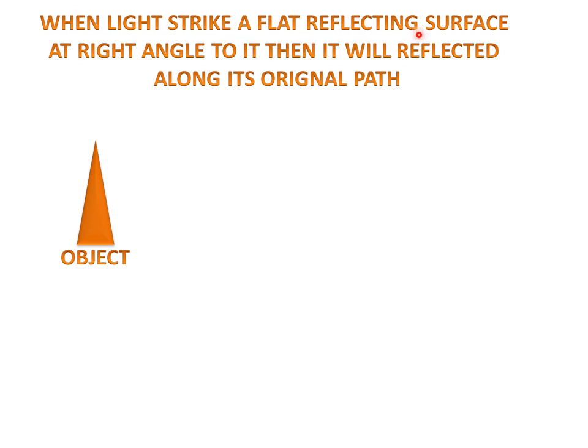When light strikes a flat reflecting surface at right angle to it, then it will reflect along its original path. What does that mean?